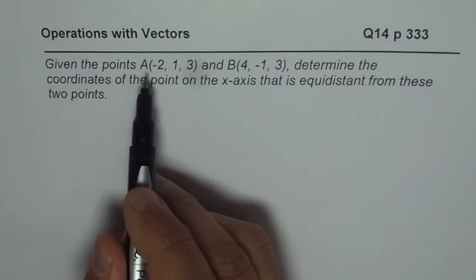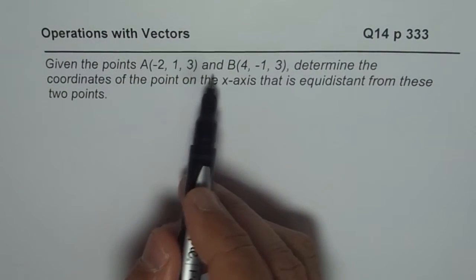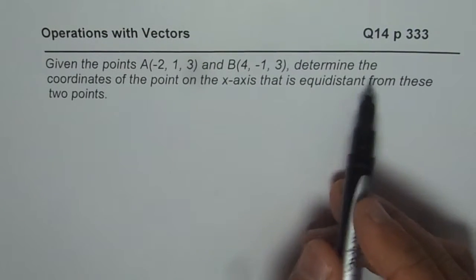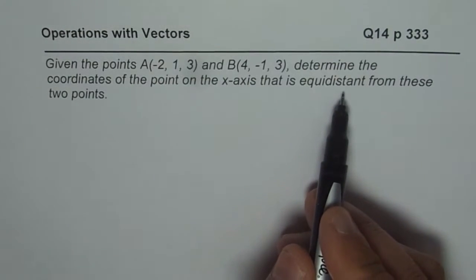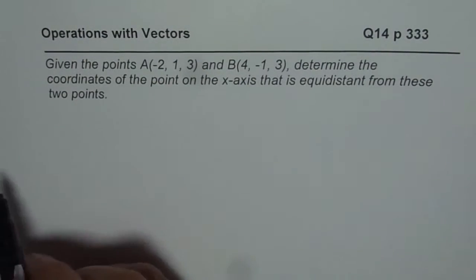The question here is: given the point A(-2, 1, 3) and B(4, -1, 3), determine the coordinates of the point on the x-axis that is equidistant from these two points.